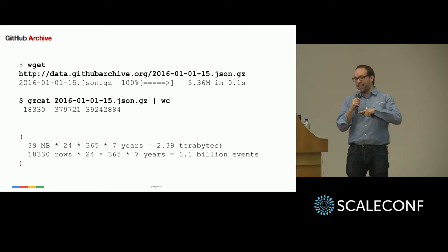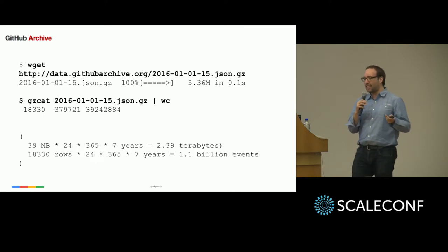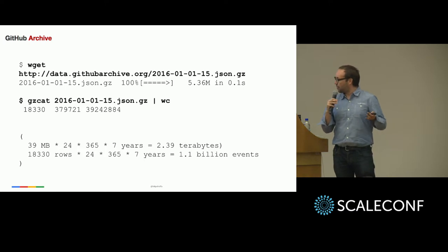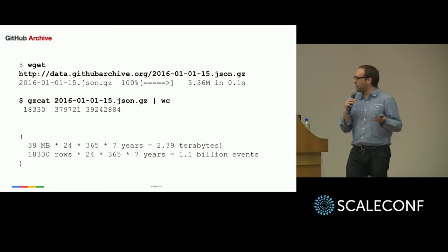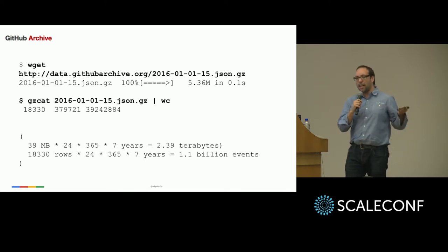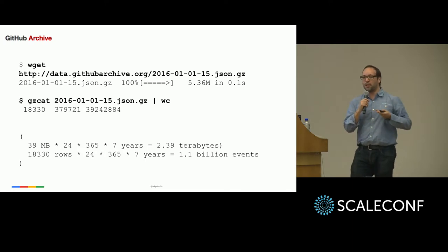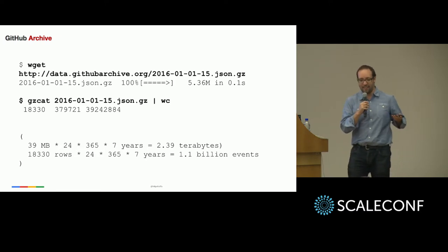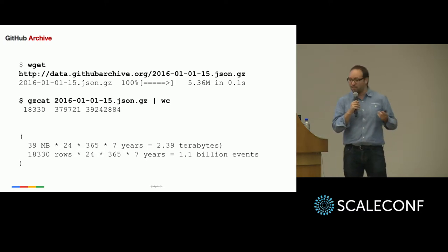At this rate, if you want to get seven years of data, that's a lot more data. Seven years would be 2.39 terabytes of data, more than one billion events. And you might be able to download all of this, but then what do you do? Where do you put this data? How do you analyze it?